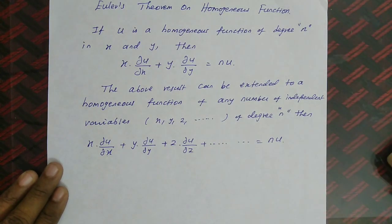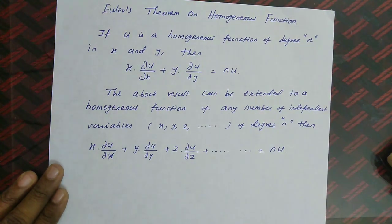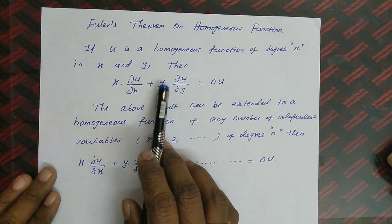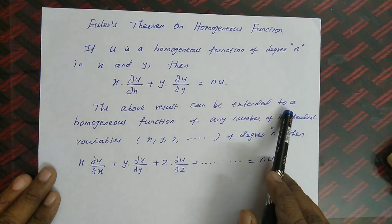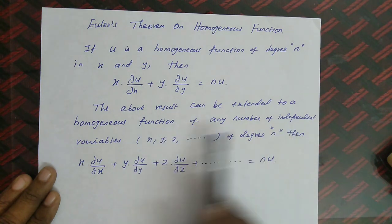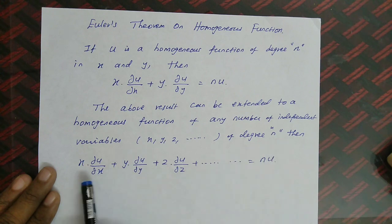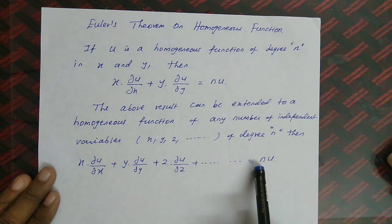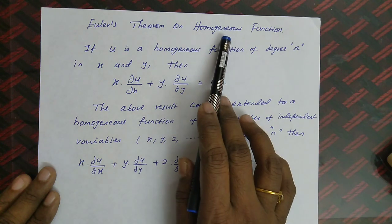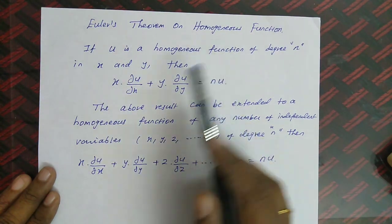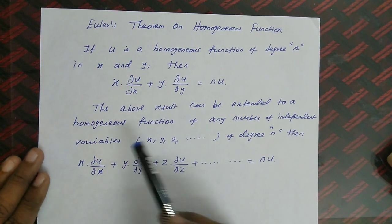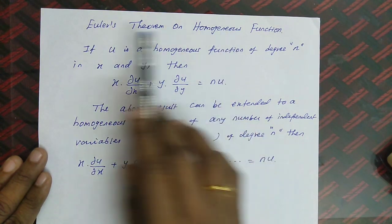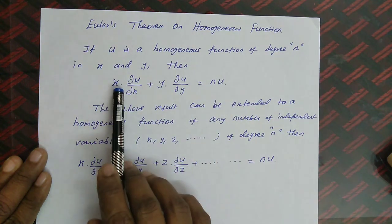The next topic is Euler's theorem on homogeneous functions. If u is a homogeneous function of degree n in x and y, then x · ∂u/∂x + y · ∂u/∂y = n·u. This result can be extended to any number of independent variables x, y, z, etc., of degree n: x · ∂u/∂x + y · ∂u/∂y + z · ∂u/∂z + ... = n·u. Euler's theorem applies only when the given function is a homogeneous function.